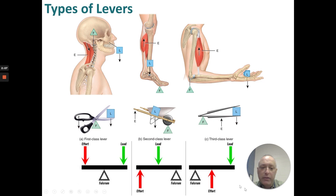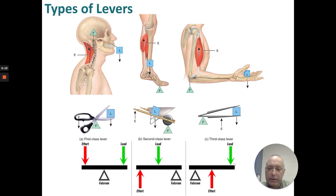There are three classes of levers: first class, second class, and third class. First class is when the fulcrum is right in the middle and you have balanced effort and load. Second class is when the fulcrum is at the distal end. Third class is when it's at the proximal end. Each of these levers exert different amounts of force and movement.